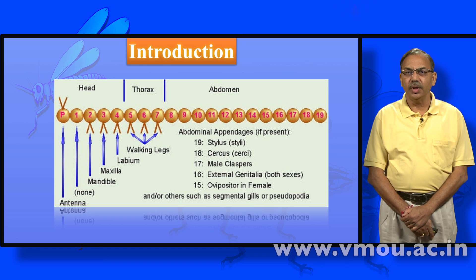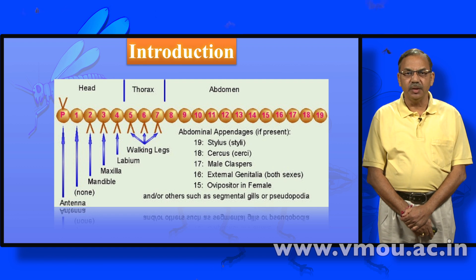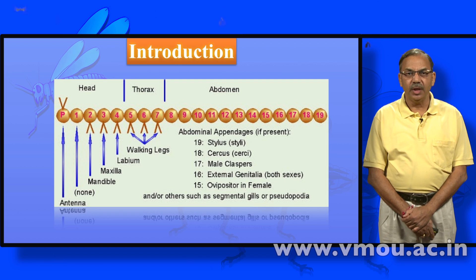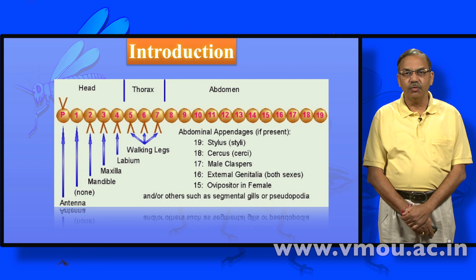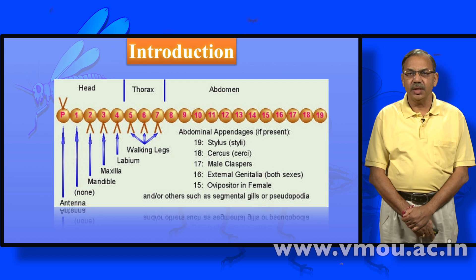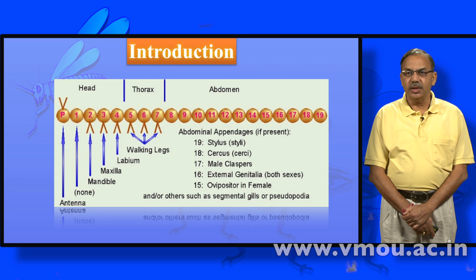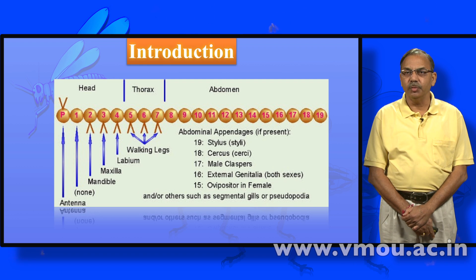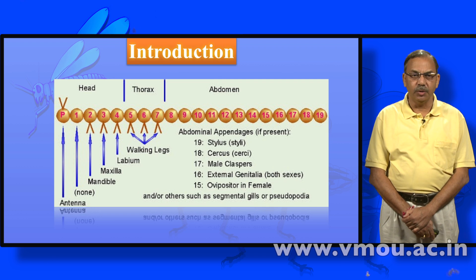That constitutes the 19-segment structure of an insect. This figure clearly depicts the same: antenna, mandible, maxilla, labium, walking legs (three pairs). Then segment 19 is the stylus, 18 is the cercus from the posterior end, and 17 is the male claspers. Segment 16 shows external genitalia for both sexes, and 15 is the ovipositor in the female. This is the segmental arrangement of an insect body.